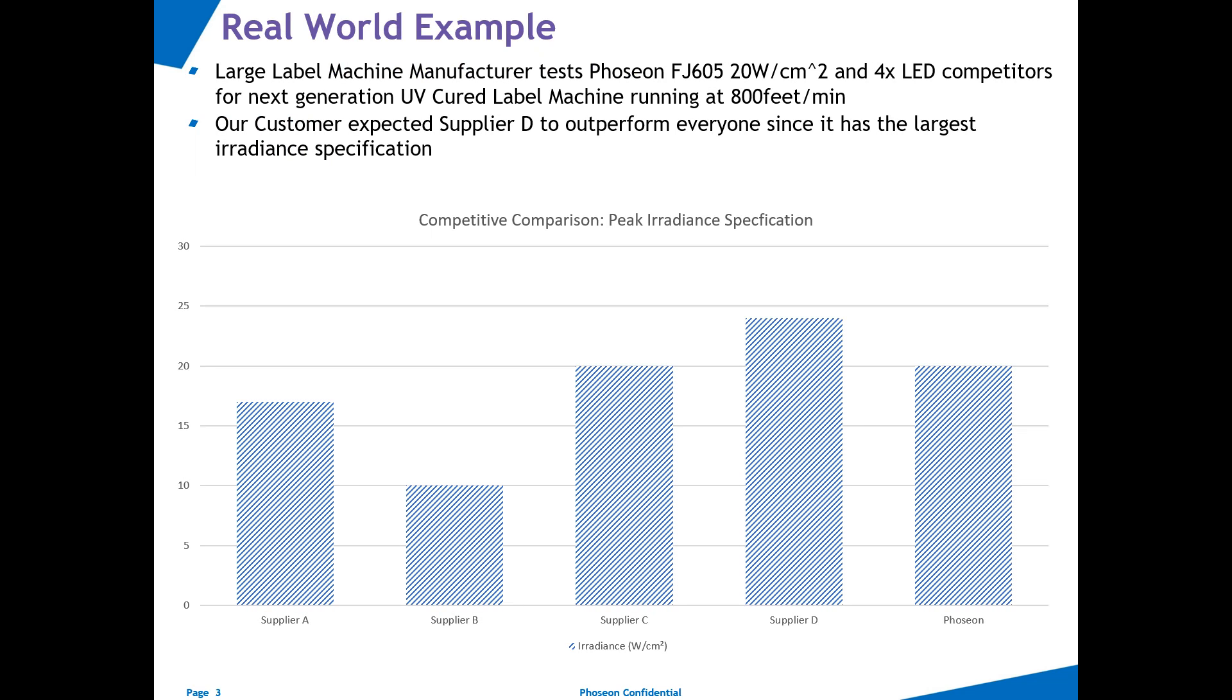As I already mentioned, recently one of our industrial partners approached us when developing a label printing machine with the goal to run at 800 feet per minute. Upon talking to our global sales team to determine the form factor and electrical requirements for this project, Phoseon eventually did recommend the FJ605 20 watt per square centimeter.